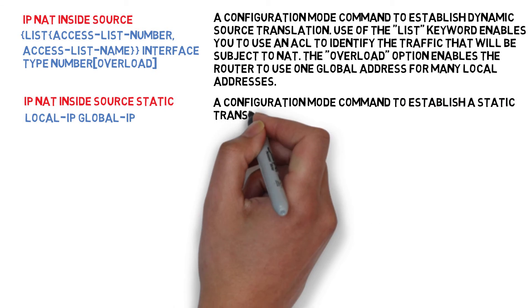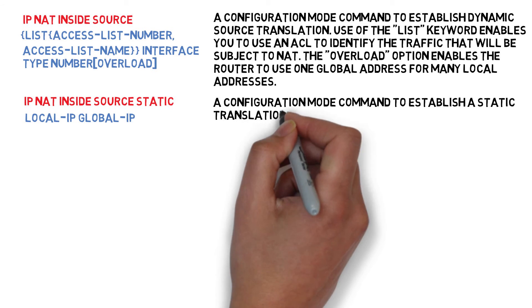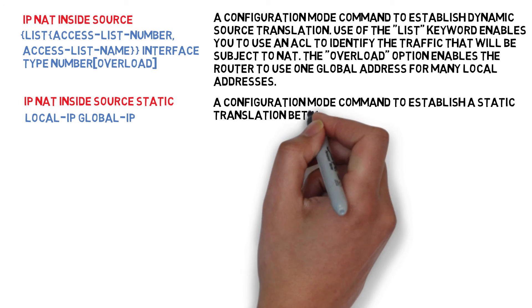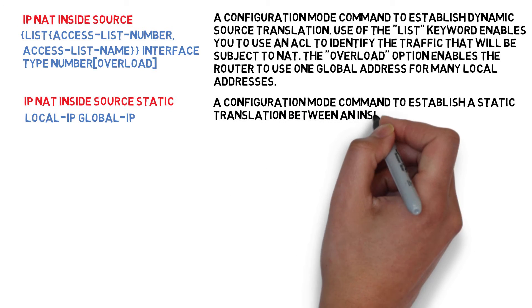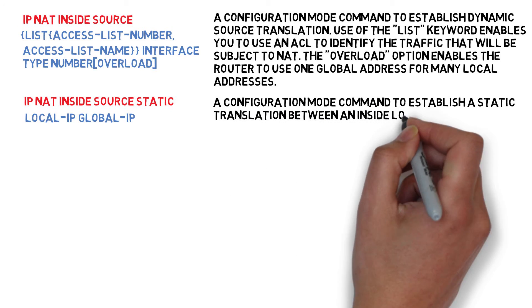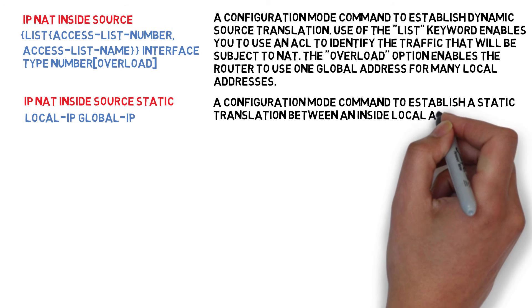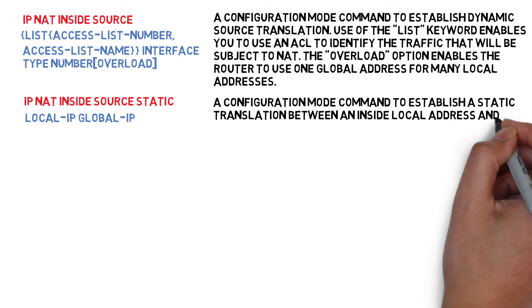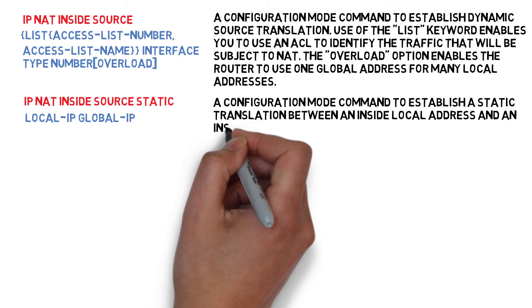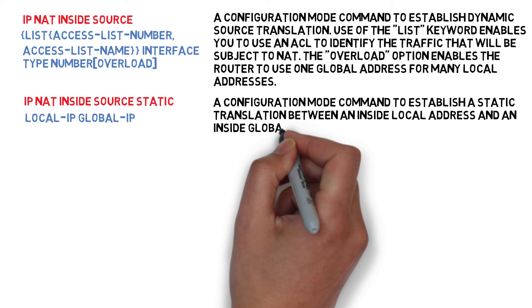IP NAT inside source static — local IP, global IP. A configuration mode command to establish a static translation between an inside local address and an inside global address.